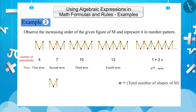Many times, seeing the two shapes of M, we misunderstand the number of matchsticks as 4 + 4 instead of 4 + 3, and in the increasing order we keep making this mistake, which gives us a wrong number pattern.